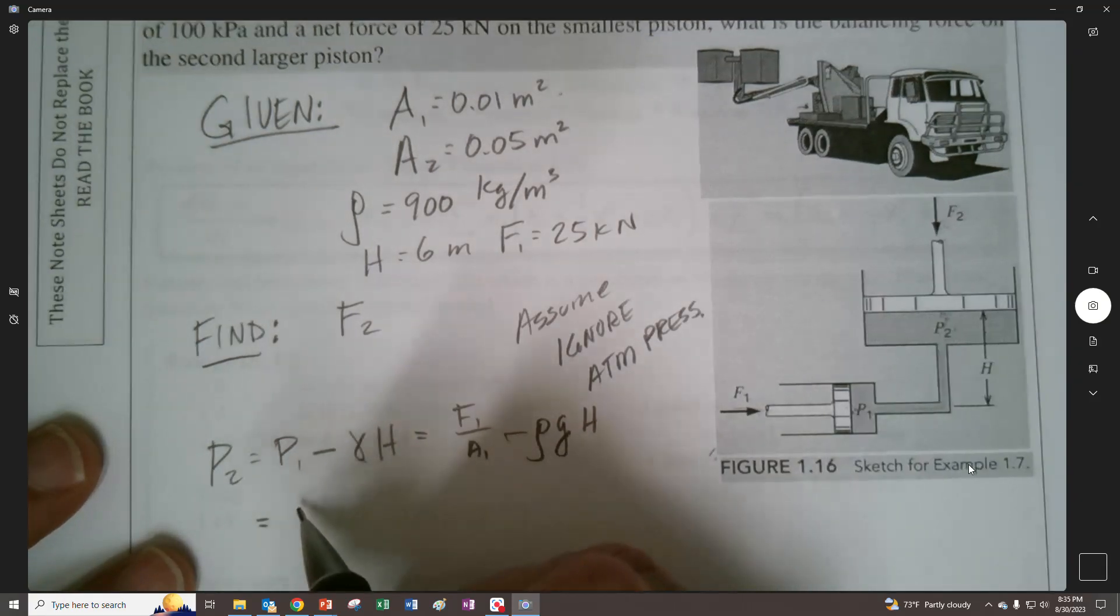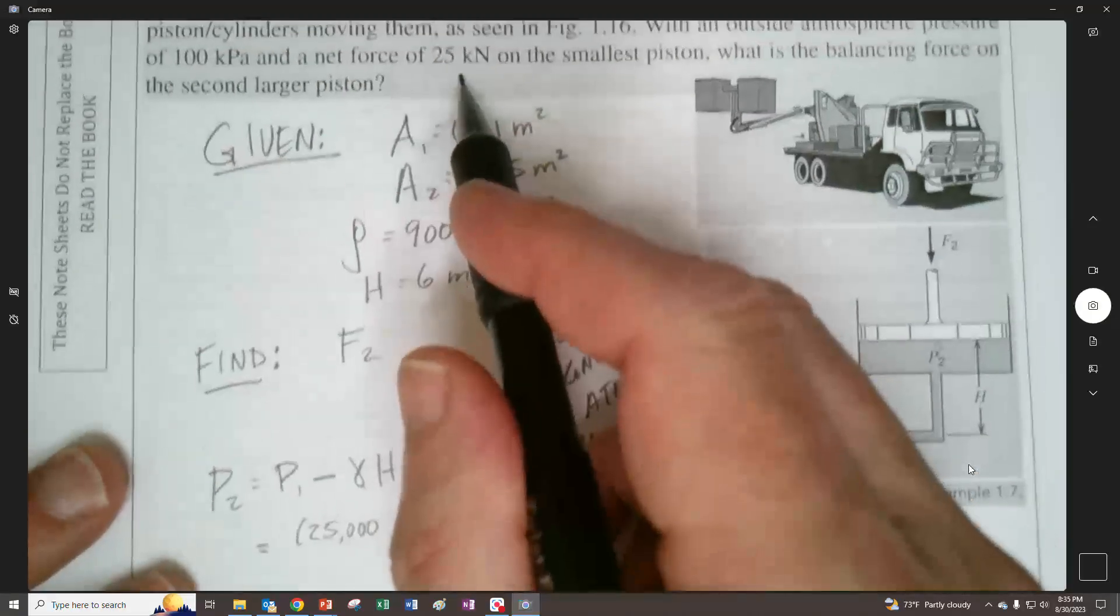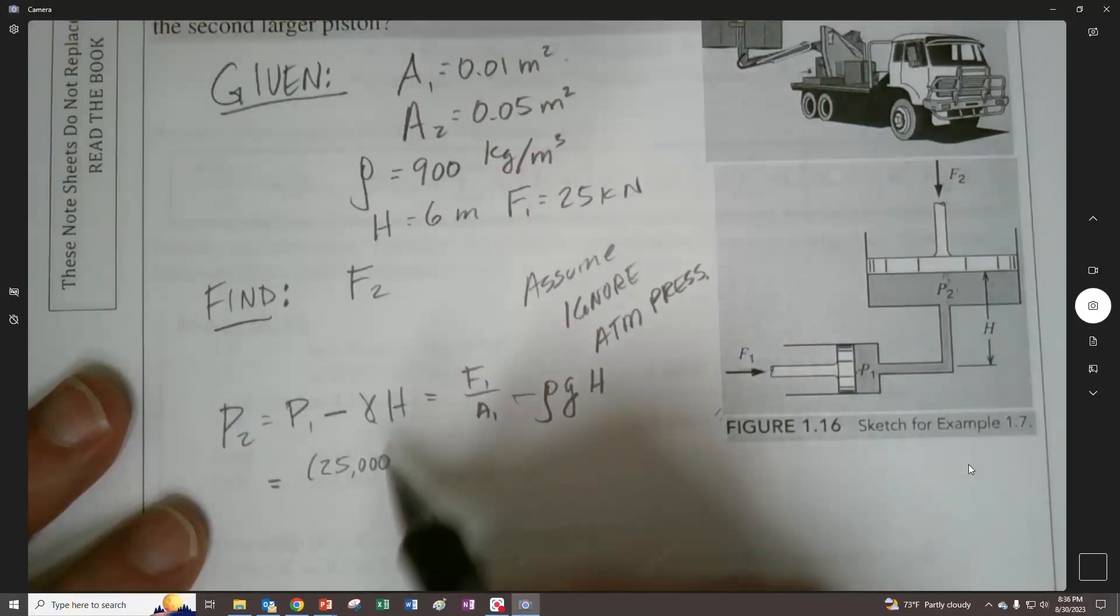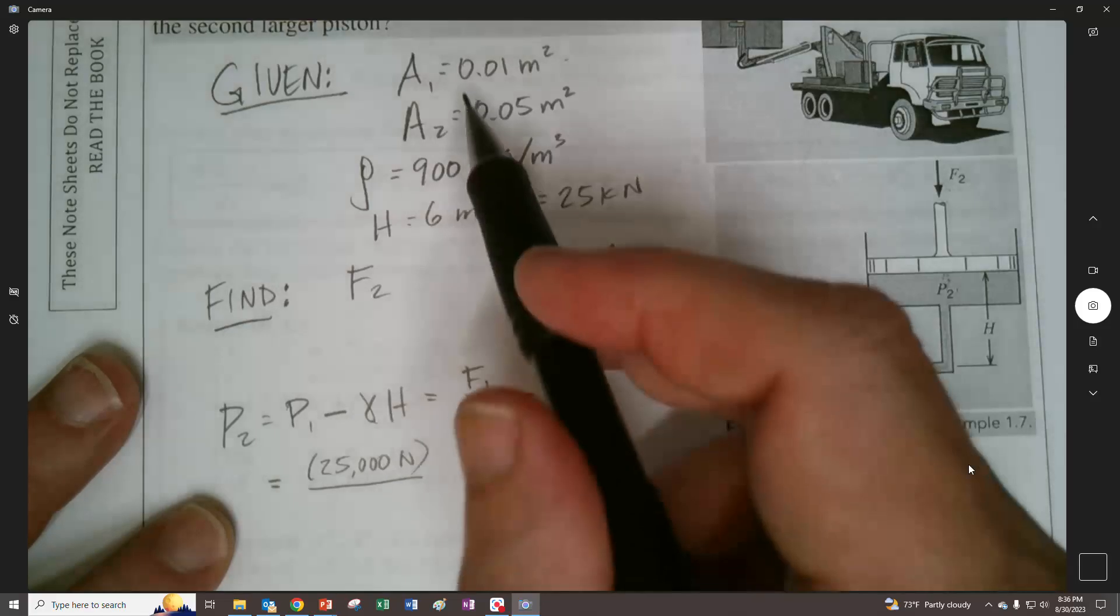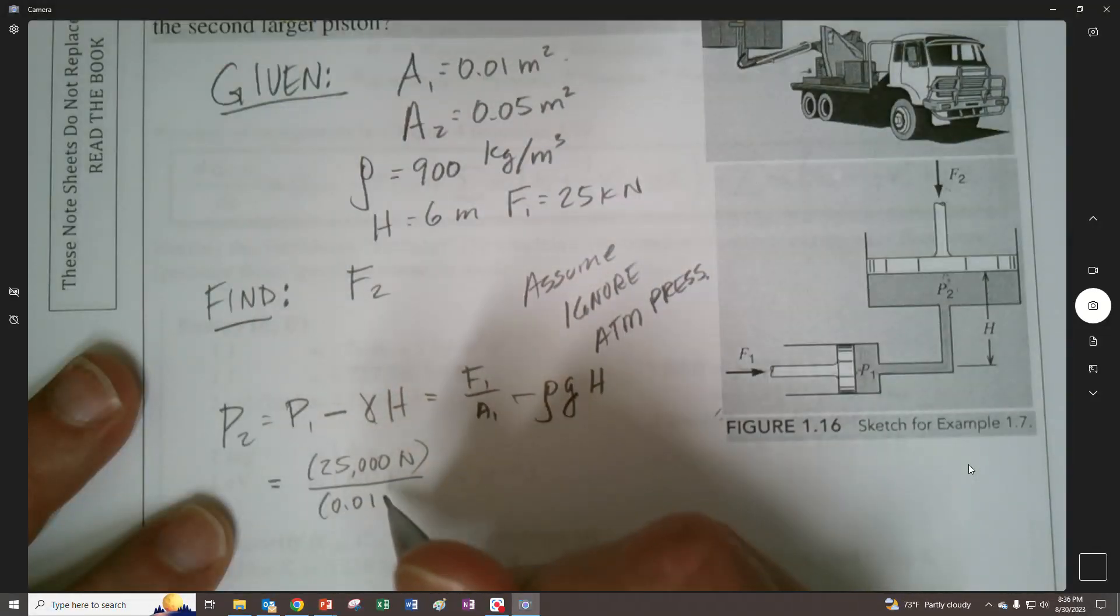So for P1, we take our 25,000, but let's stick in, I mean, we did 25 kilonewtons, but let's keep it in base units, so it's newtons, divided by the A1, which was 0.01 meters squared.